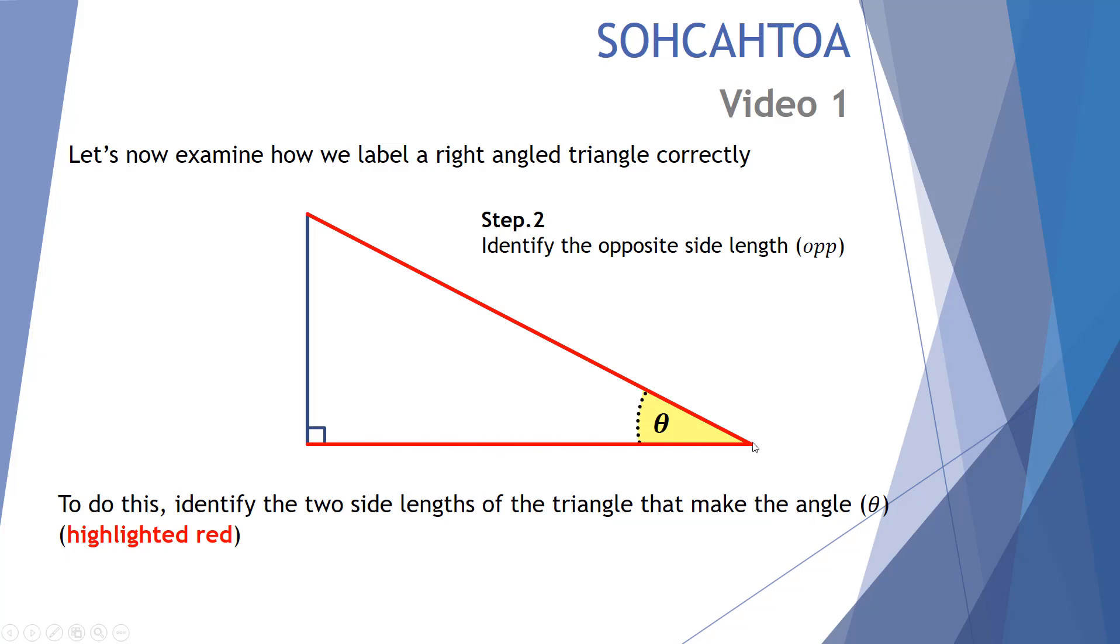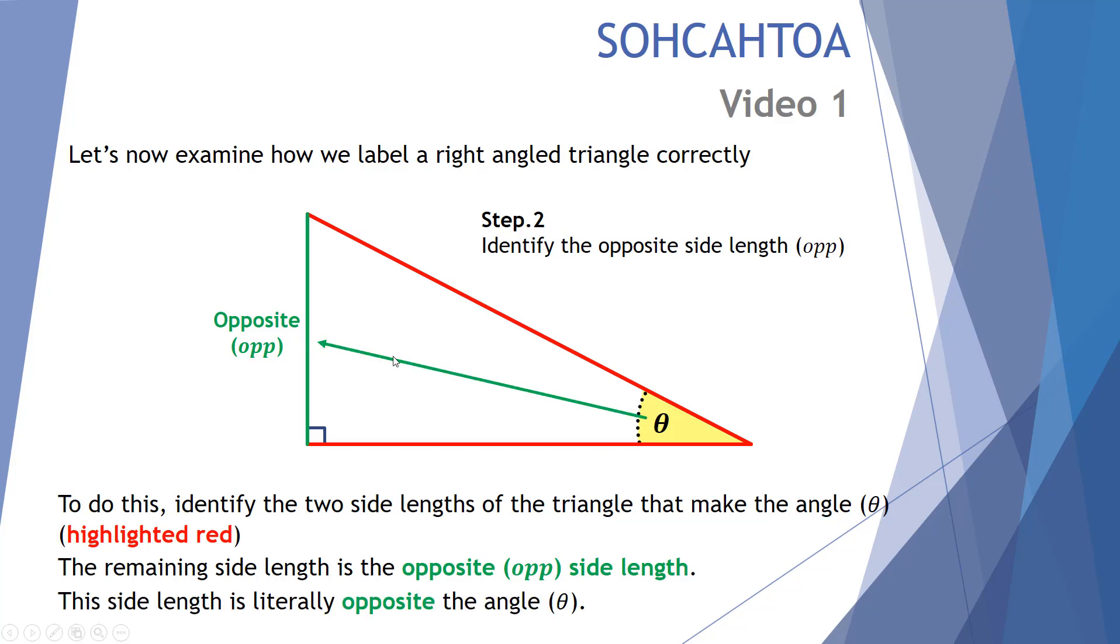This one on the bottom in red and the diagonal are the two lengths that make this angle theta. Well, this third and final remaining length is the opposite side length. It literally is a side length that is opposite the angle theta.